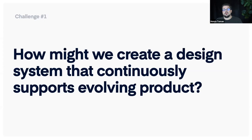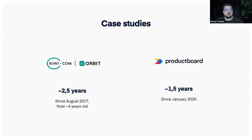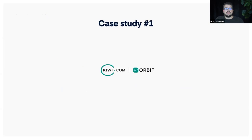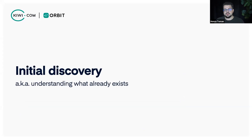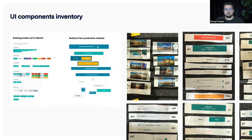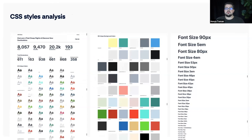The first challenge: how might we create a design system that continuously supports an evolving product? I'll present two case studies. First is Kiwi, where I worked for about two and a half years on Orbit, which is now about four years old. We started with Orbit in 2017 — Kiwi.com was founded in 2012, meaning there were five years of existing product and codebase. To understand the situation, we started with initial discovery: we did a UI components inventory, even offline without Figma, just cutting paper.